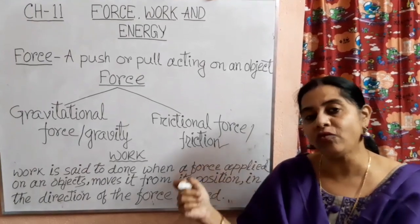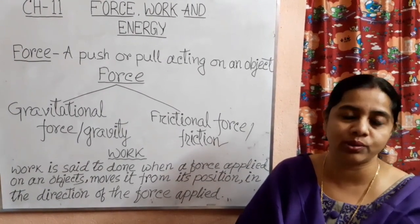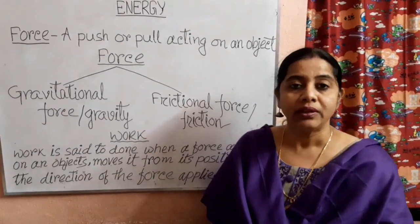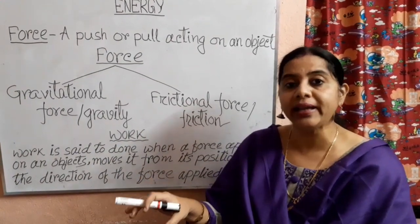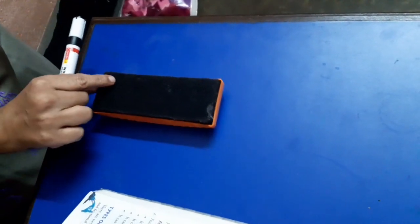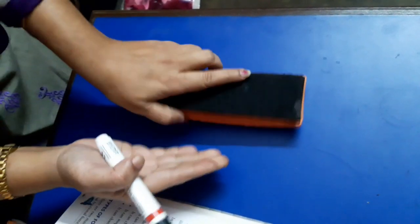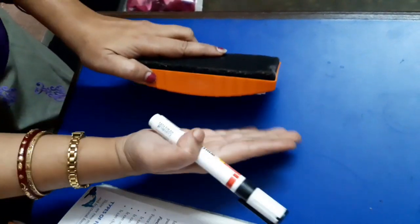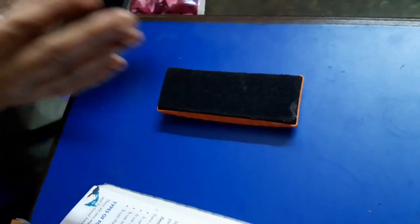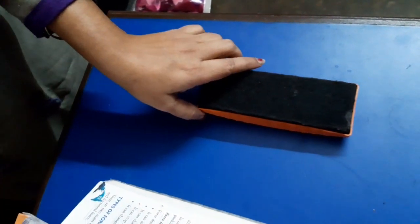What is restricting force? Students, when an object moves, there is a force working between that moving object and the surface. Suppose this duster is here and this table is the surface. When it moves, a force is acting between the underside of this duster and the surface — this is frictional force. This frictional force helps the moving object to slow down and stop.